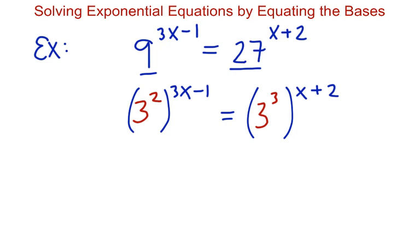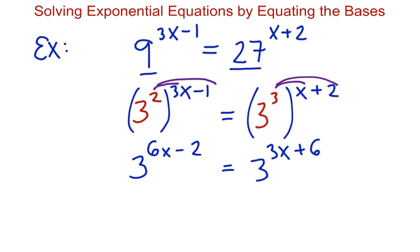So at this point, our bases are equal, but I'm going to take one more step of cleaning up the exponents. When I have 3 squared raised to the power of 3x minus 1, I'm really multiplying my exponents. So distributing 2 to both pieces here, we'll have 6x minus 2 as the new power on 3. And distributing on the right, we'll have 3 to the power of 3x plus 6. So again, my bases match. Therefore, 6x minus 2 must equal 3x plus 6. The exponents must be equal.